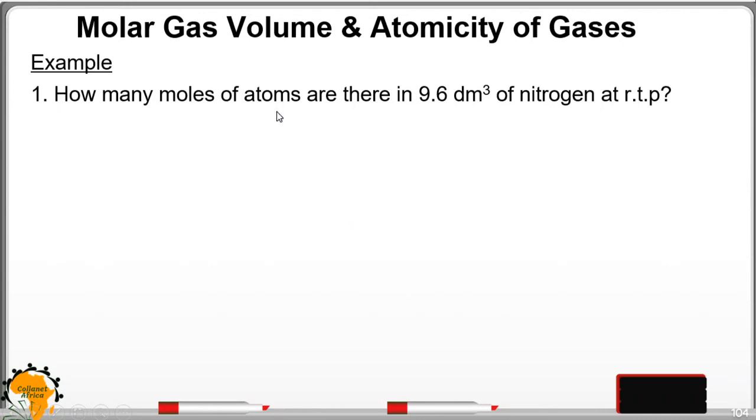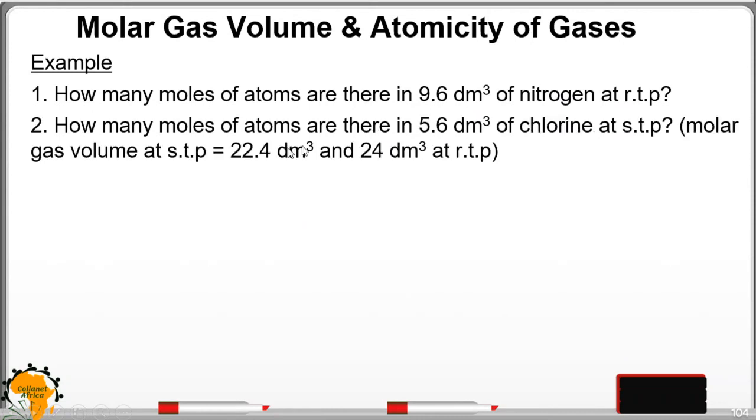Example. How many moles of atoms are there in 9.6 dm³ of nitrogen at RTP? How many moles of atoms are there in 5.6 dm³ of chlorine at STP? Molar gas volume at STP is 22.4 dm³ and 24 dm³ at RTP.